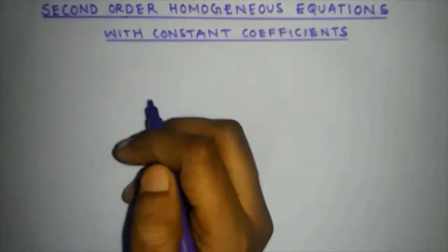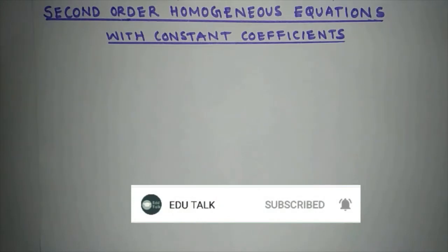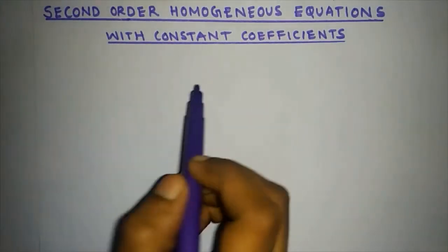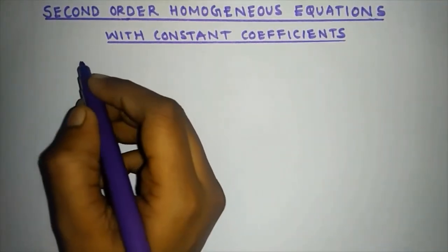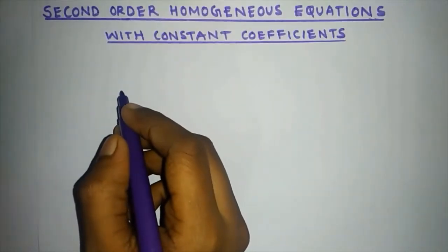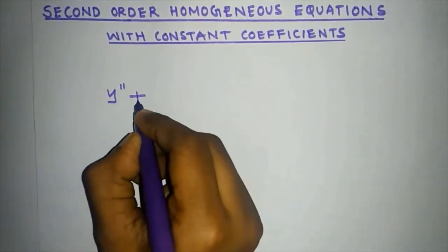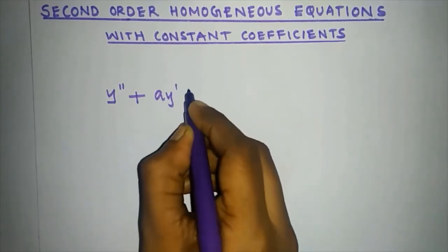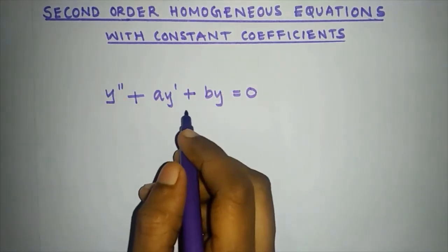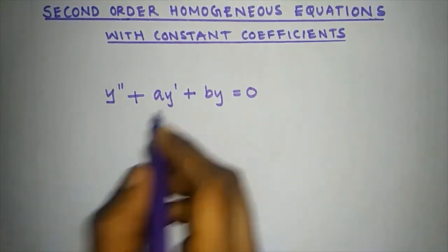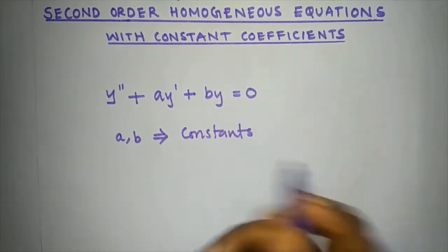2nd order homogeneous equations with constant coefficients. This equation has a general form with constant coefficients.